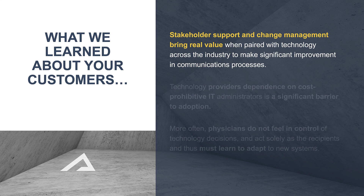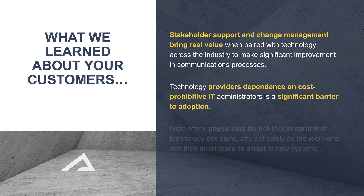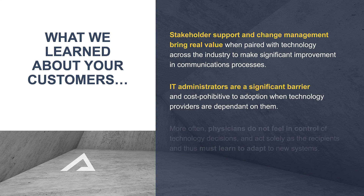Now this goes across two lines, which is probably a little more highlighting than I prefer. But let's look at the next bullet point: 'Providers dependent on cost-prohibitive IT, significant barrier.' There's so much highlighted here — there's more highlighted than not. With a little text manipulation and reordering, we're going to put 'IT administrators are a significant barrier' at the front.